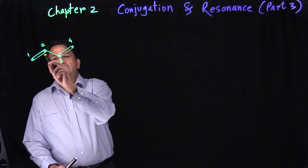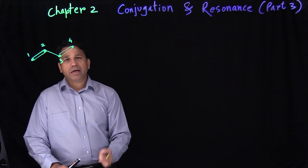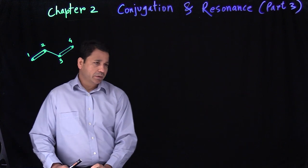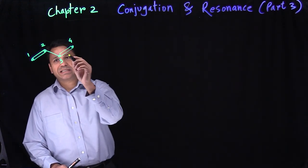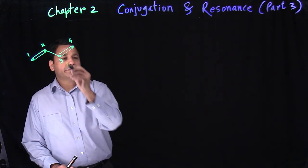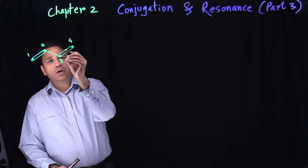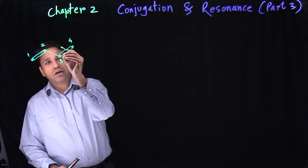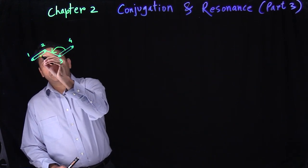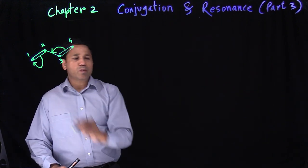When you have a double, single, double type of conjugation, there is a different way to handle it — this is the only complicated conjugation to handle out of all the others. In this case, we treat the double bond like a negative charge or an electron pair. We start by pushing these two electrons between carbons two and three, and at the same time pushing the electron pair of the pi bond onto carbon one.